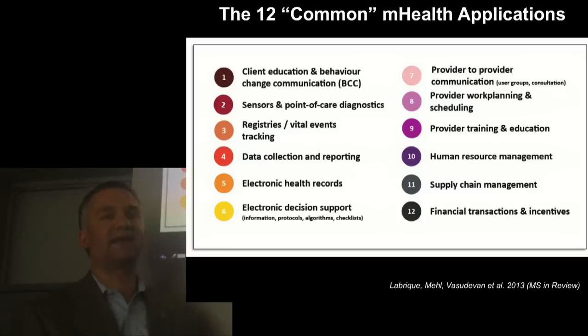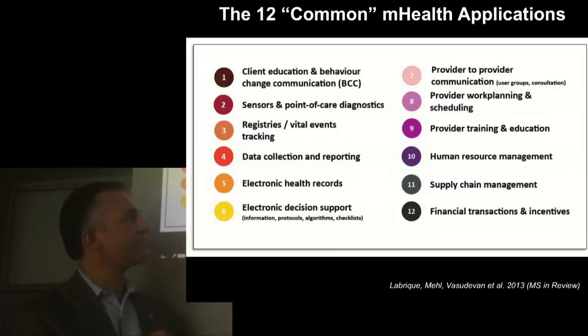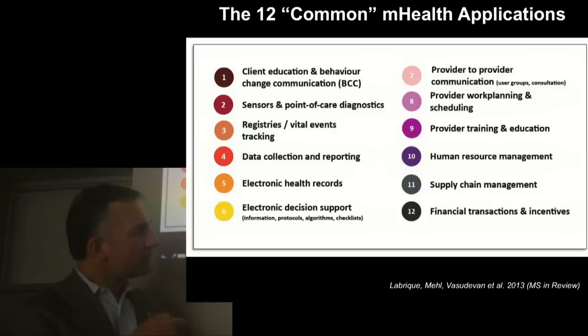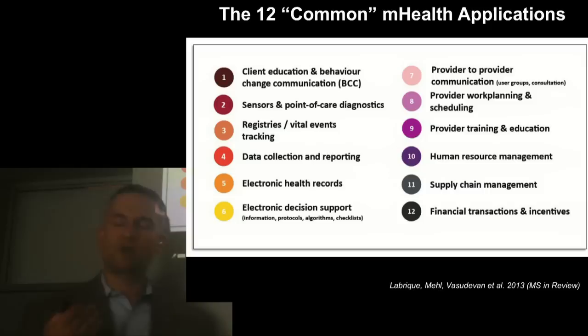Essential functions also include provider work planning and scheduling, making sure community health workers reaching vast populations can do so in a systematic and organized way; managing human resources to ensure frontline providers and vaccine deliverers are where and when they need to be; and supply chain management, making sure that stockouts are not a main reason why people in hard-to-reach rural areas don't receive care.